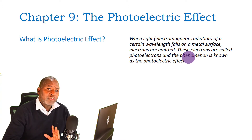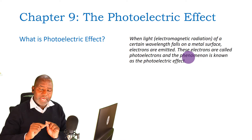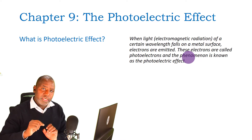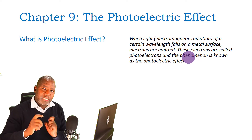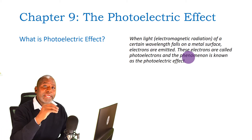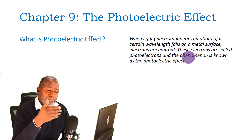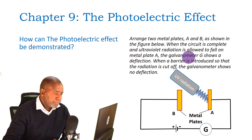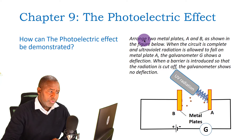Now how do we demonstrate photoelectric effect? We are going to get two metal plates, connect them in series with a dry cell — the two metal plates separated by a short distance. We connect a circuit with a dry cell and a galvanometer, and then we are going to irradiate that metal surface with UV radiation using a UV lamp.